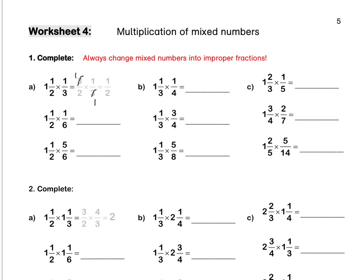Let's look at b. 1 and a third is 4 thirds as an improper fraction, times 1 quarter. Divide top and bottom by 4, and the final answer is 1 third. Press pause to complete question 1.